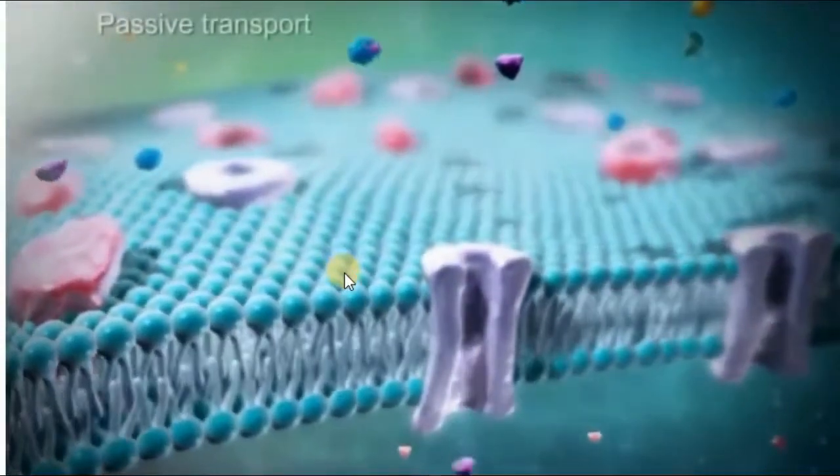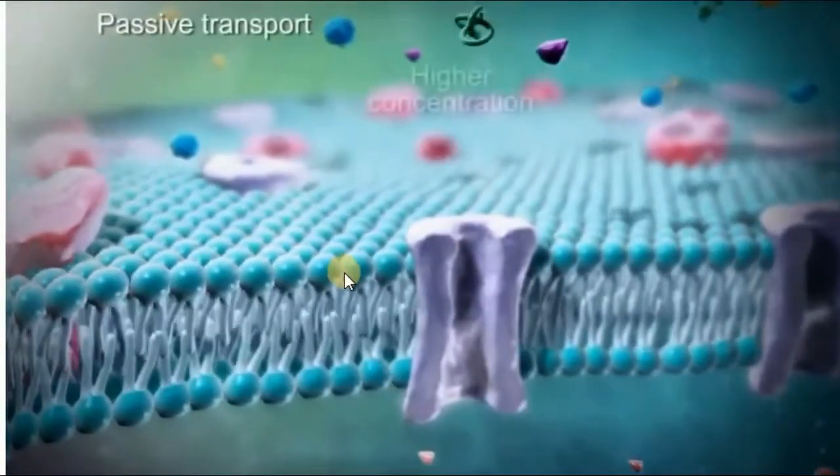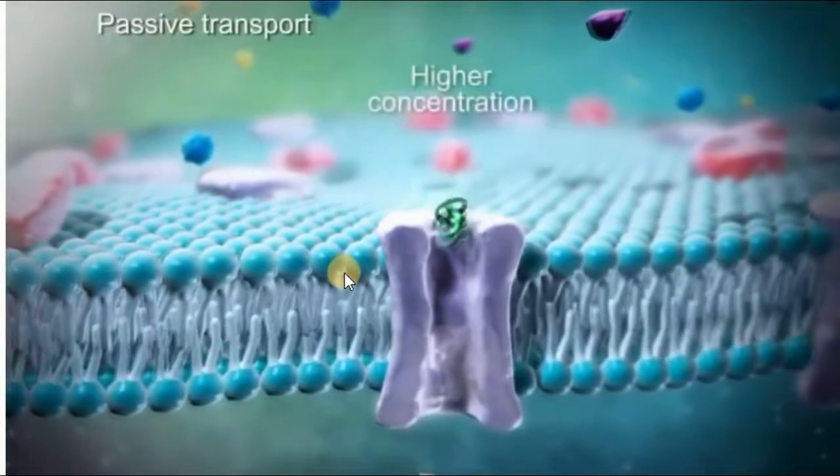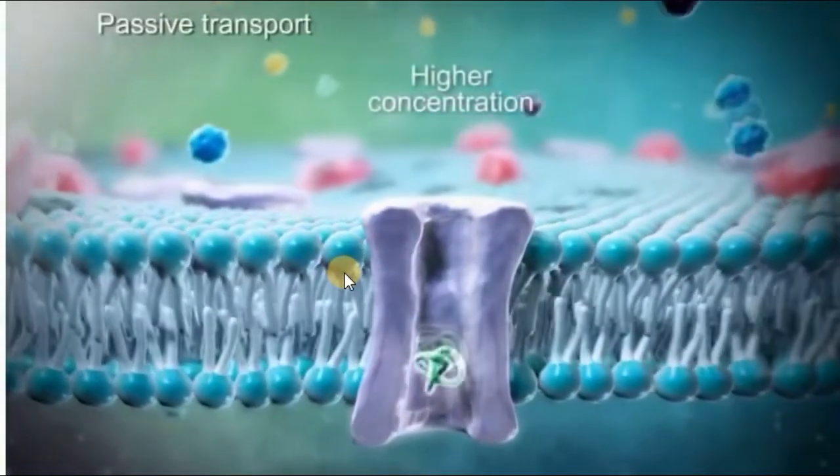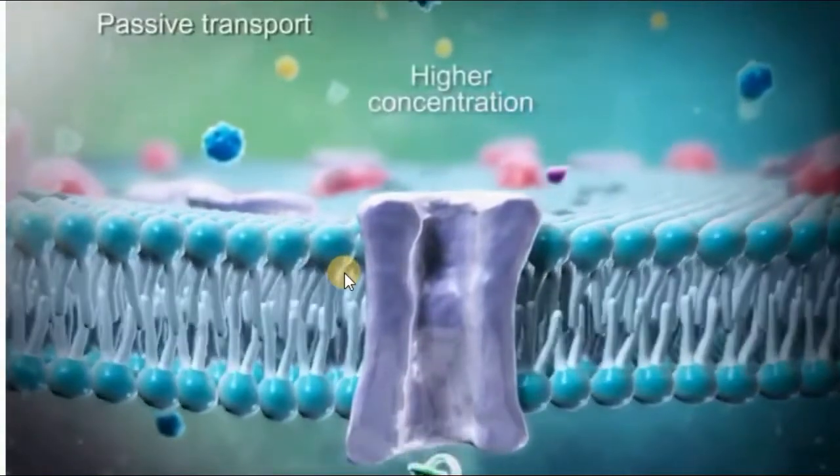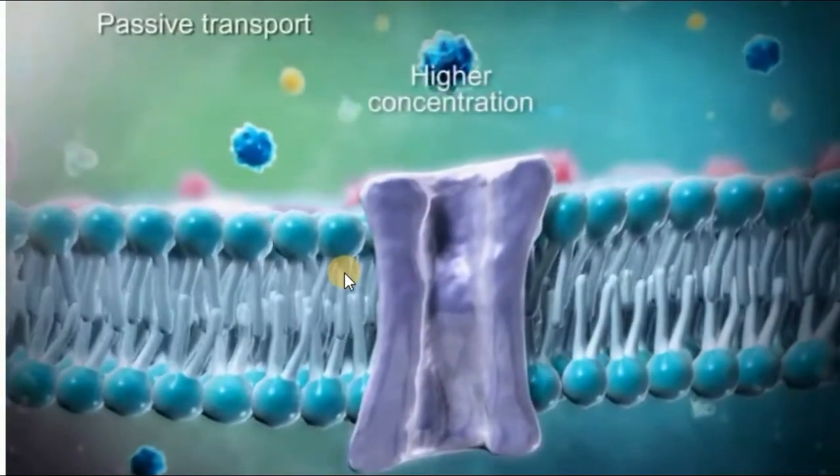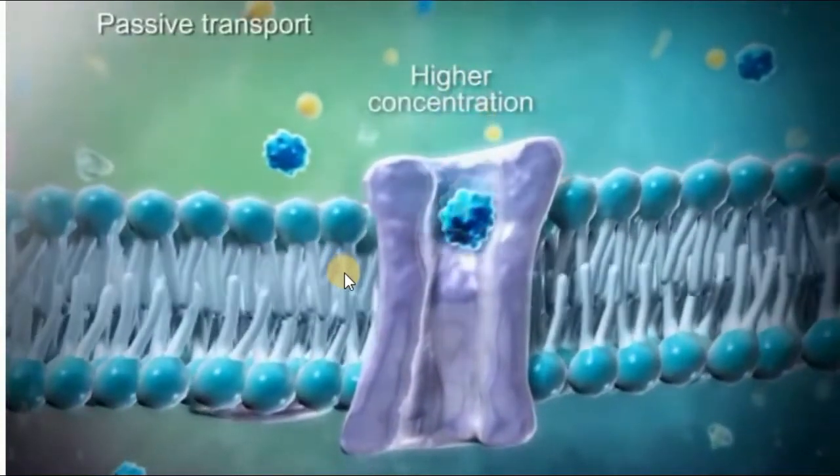When the concentration of a substance is higher on one side of the cell's permeable barrier, its molecules use osmosis or diffusion to move through the barrier without the cell using any energy.